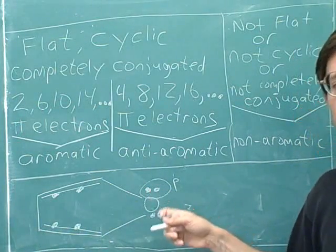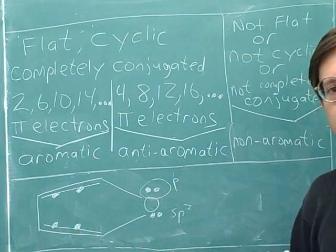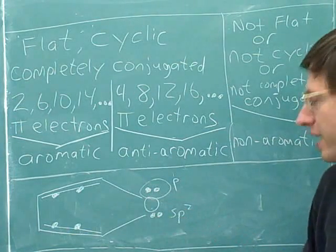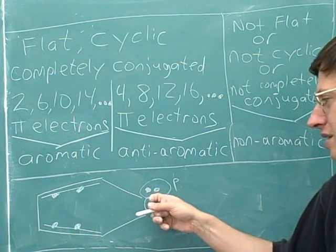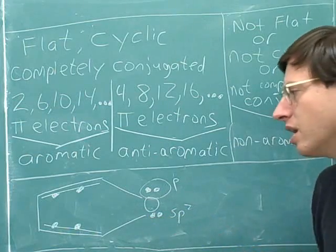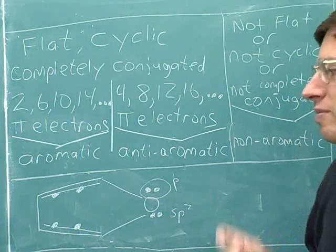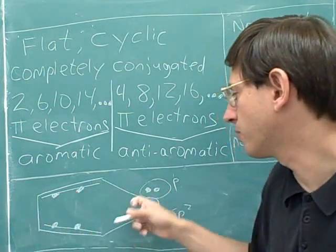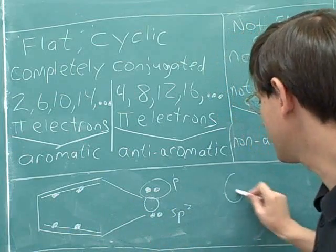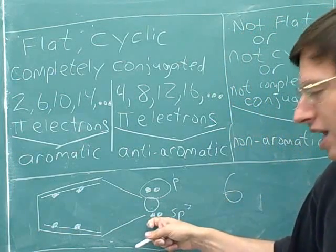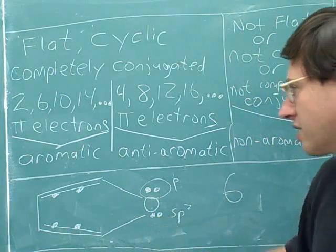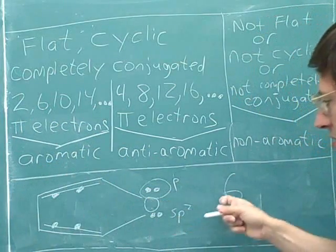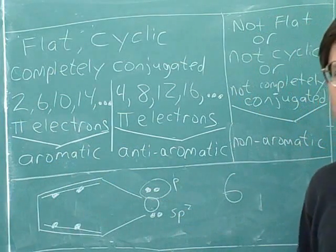So only one of these lone pairs counts as pi electrons. We could use whichever we wanted, but if we count these as pi electrons, these don't count. So how many pi electrons do we have total? One, two, three, four, five, six. These don't count — this lone pair doesn't count. So yes, this is aromatic because we have six pi electrons.